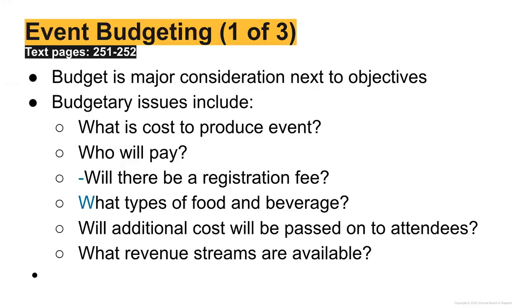Now let's talk about budget, which plays into your site selection. Next to the objectives, budget is critical. You have to think about what it will cost to produce the event. Some conferences cost upwards of a million dollars, some are in the $100,000 to $200,000 range, some are multi-million dollars, depending on attendance, sponsorships, and location. Who is going to pay for those costs — is there enough money to start booking and putting down deposits, or do you have to wait for registration fees to come in first? And will there be a registration fee at all?